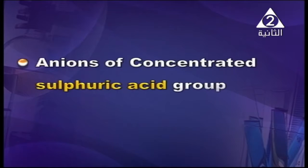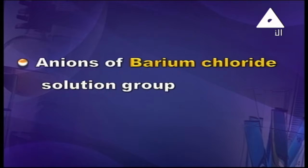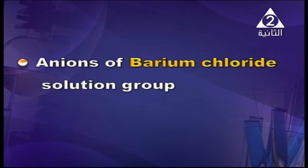The second group: anion of concentrated sulfuric acid — a special group for sulfuric acid only. The other one: anion of barium chloride — this special group makes a reaction with barium chloride only. So how many groups? HCl, H₂SO₄, BaCl₂. All of them are very important. When I tell you anion, you have three important groups.